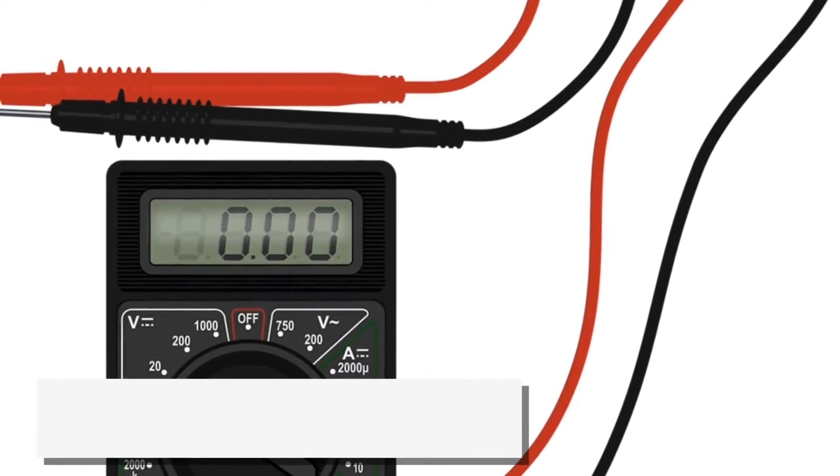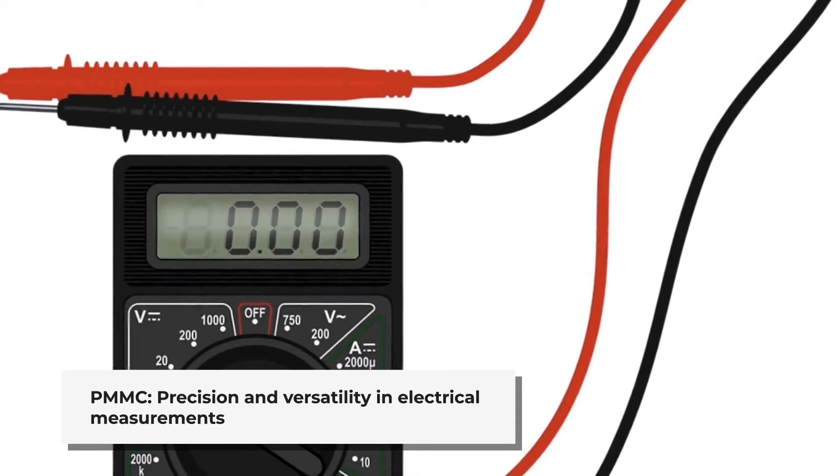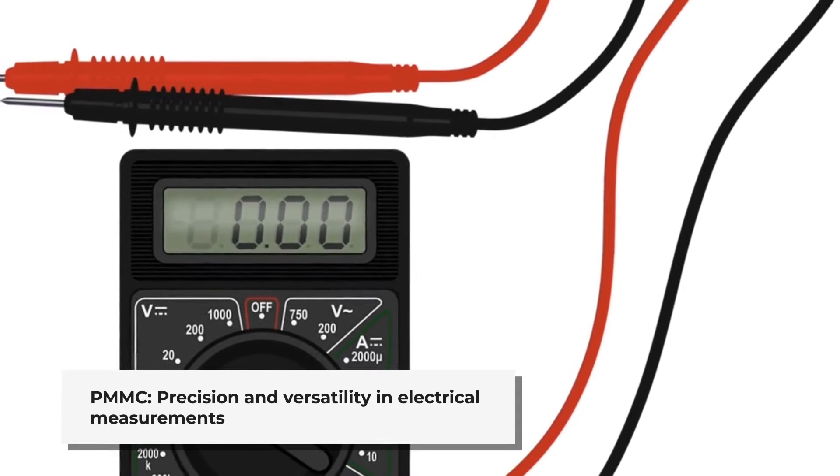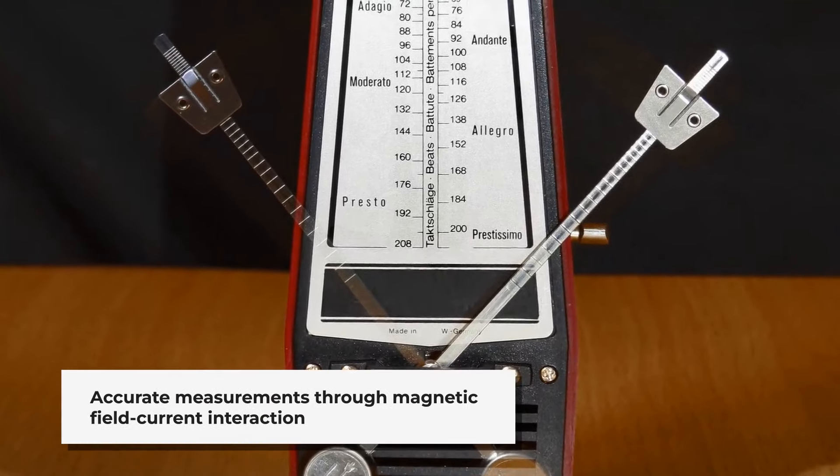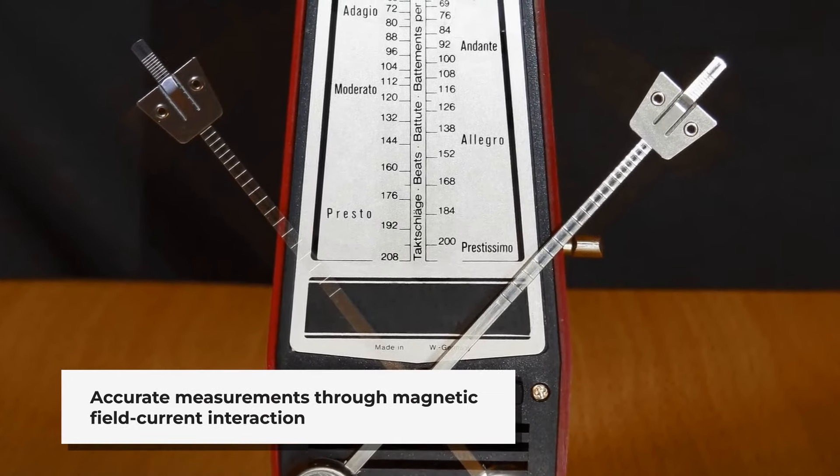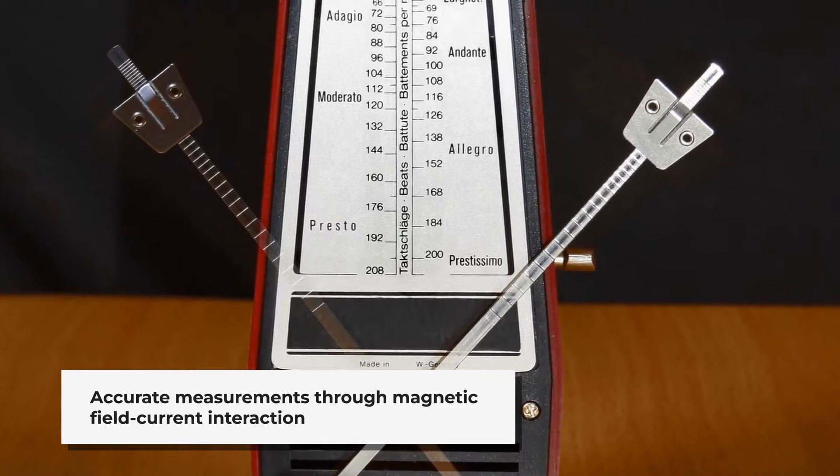In summary, the PMMC instrument is a cornerstone of electrical measurement, offering a blend of precision and versatility. Its principle, based on the interaction between magnetic fields and electric currents, enables it to deliver accurate measurements across a range of applications.